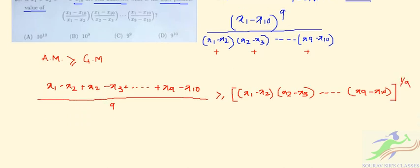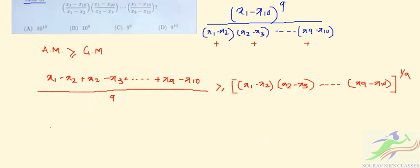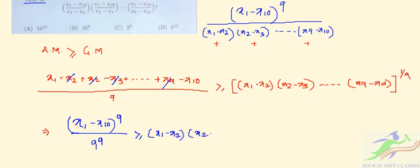So if we take the power over this side, this will all cancel out. So this x2, x2, x3, x9 will cancel out and we will be left with only x1 minus x10 to the power 9 by 9 to the power 9, which is greater than equal to x1 minus x2, x2 minus x3 up to x9 minus x10.